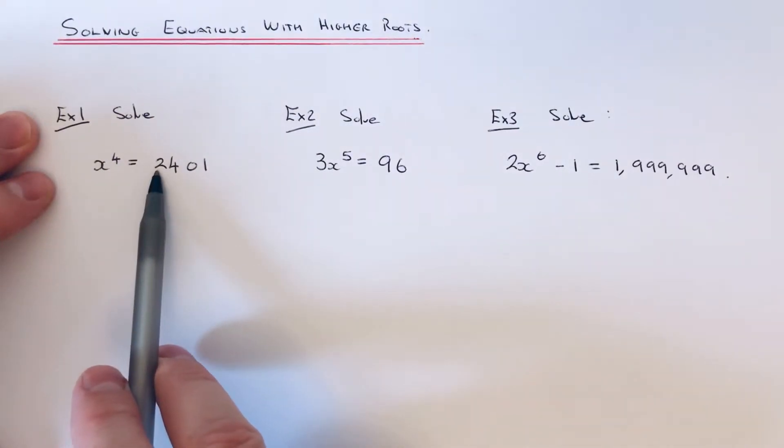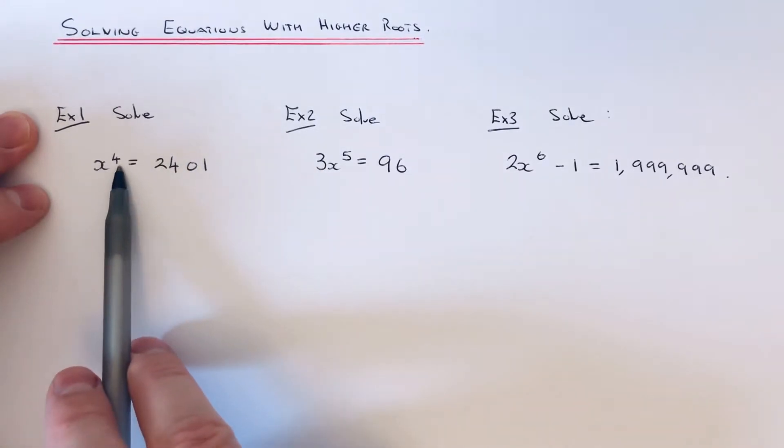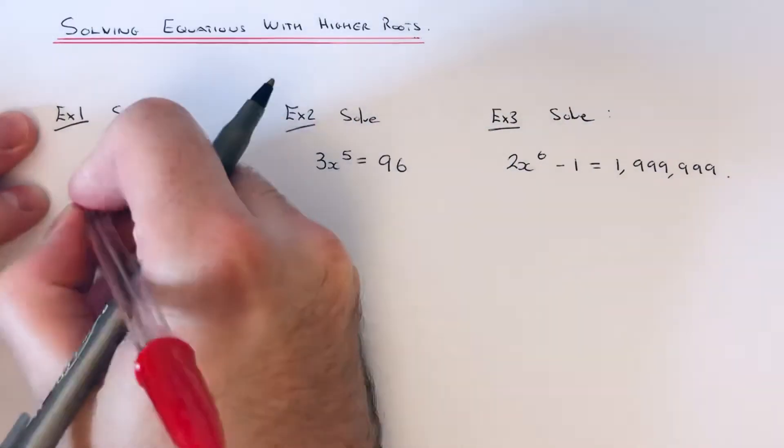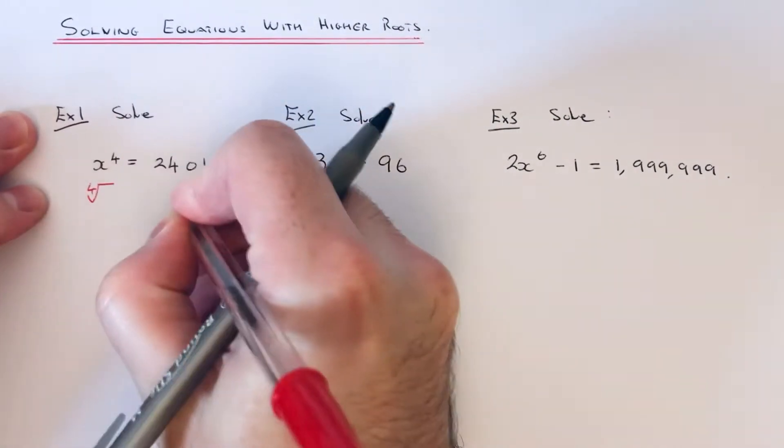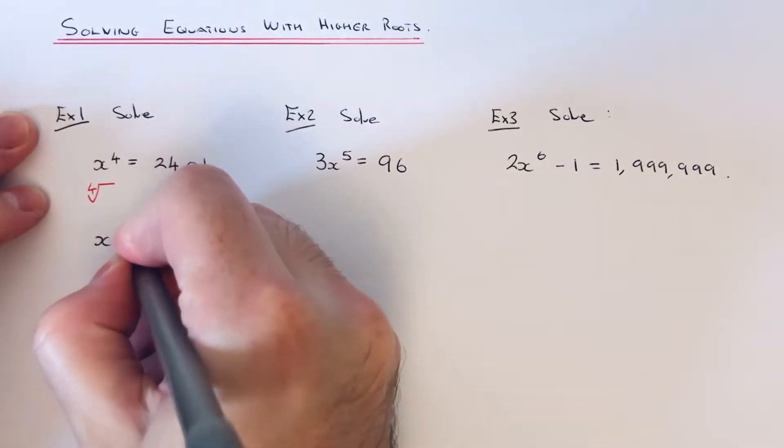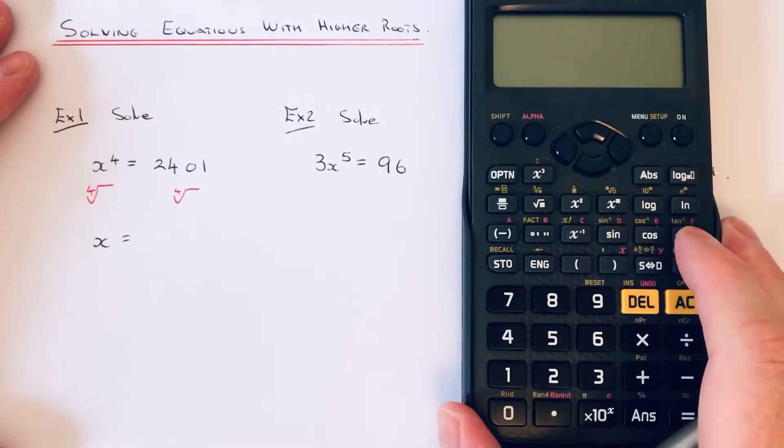To solve this, we have to do the opposite to power 4, which is to do the fourth root on both sides. This will give us our x value. If you don't know this in your head, use your calculator.